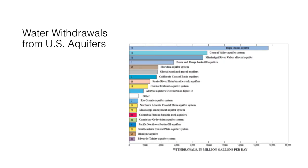Aquifers that provided most of the total withdrawals for irrigation, public supply, and self-supplied industrial water uses in the United States during 2000 is shown in this figure. The High Plains aquifer, also called the Ogallala aquifer, and California's Central Valley aquifer have very high daily water withdrawals.